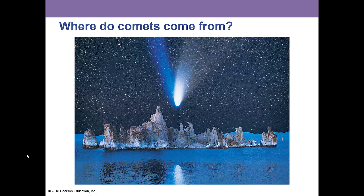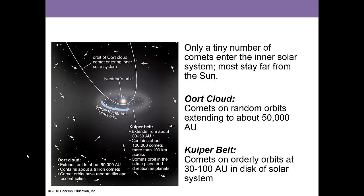Where do comets come from? Only a tiny number of comets enter the inner solar system; most stay far from the sun. The Oort Cloud and the Kuiper Belt are the two source regions. Comets in random orbits extending to about 50,000 AUs come from the Oort Cloud — that's where Hyakutake came from. The Kuiper Belt has comets much closer in, at 30 to 100 AUs, in more orderly orbits — that's where Halley's Comet came from.